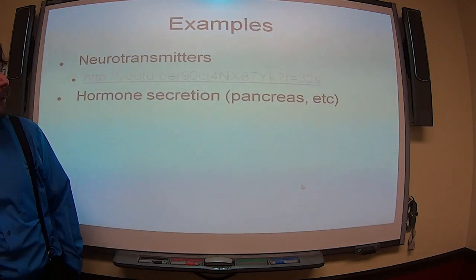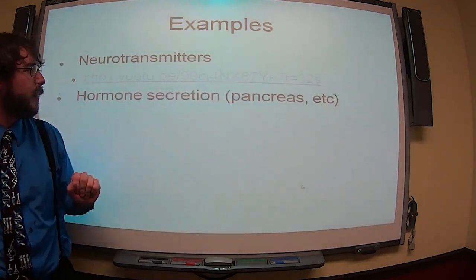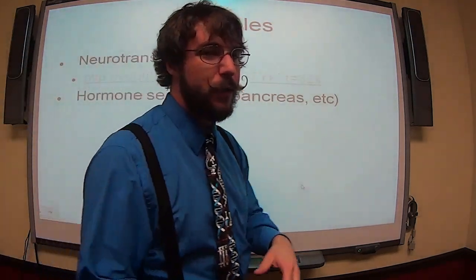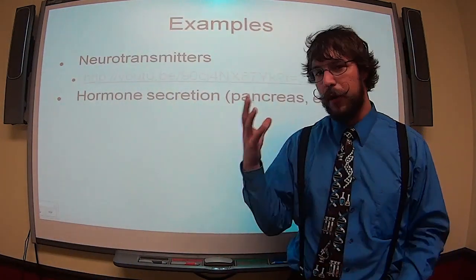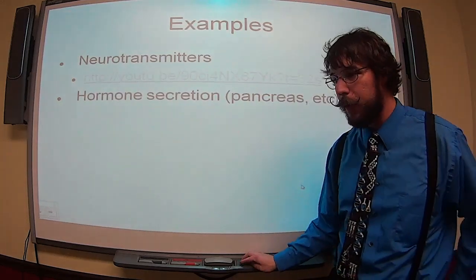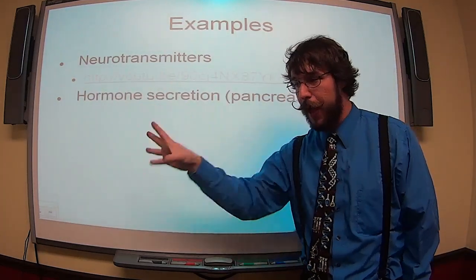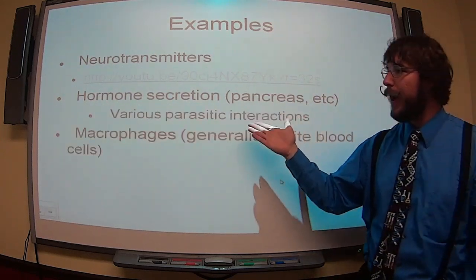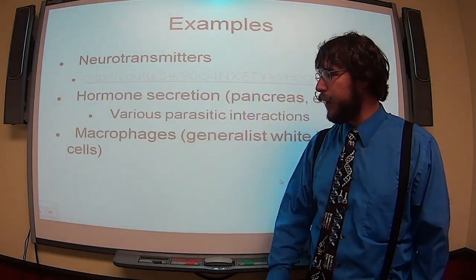Here's some examples. Neurotransmitters. Hormone secretion, like stuff coming out of the pancreas. Anytime your pancreas or liver or even parts of your brain are releasing large amounts of hormones, they're going to be dumping them out from the Golgi, from those vesicles.